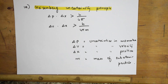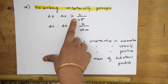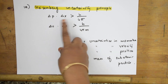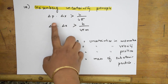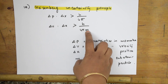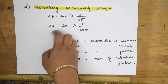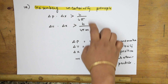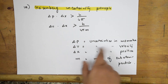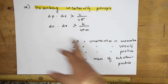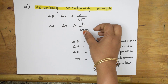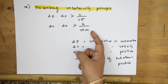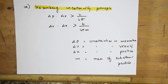For the Heisenberg Uncertainty Principle, the formula is: Δp × Δx ≥ h / 4π, where p is momentum. Since momentum = mv, this can be rewritten as: m × Δv × Δx ≥ h / 4π. Both forms are useful for solving numericals. Here, Δp is uncertainty in momentum, Δv is uncertainty in velocity, Δx is uncertainty in position, and m is the mass of the subatomic particle. h is Planck's constant and π ≈ 3.14.